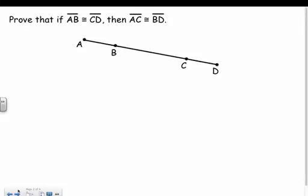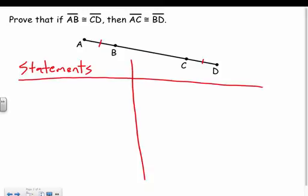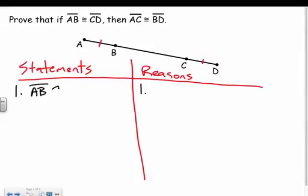The proof says: prove that if AB is congruent to CD, then AC is congruent to BD. First, like we always start, let's begin with our given. I like to draw things on my picture — AB is congruent to CD — so I can visualize that. That's my first statement. I'm going to write statements and reasons in my two-column proof. Statement one: AB is congruent to CD. Reason: given.